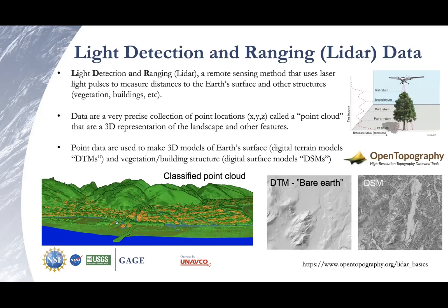LIDAR is an acronym which stands for Light Detection and Ranging. It's a method that basically uses laser pulses emitted from a sensor, fixed oftentimes to an airplane or also to satellites. It measures the time of travel from the source back to the instrument, and basically uses that information to determine the distance from the Earth in a very precise way. You can use these data to look at the Earth's surface, as well as structures and vegetation across it.